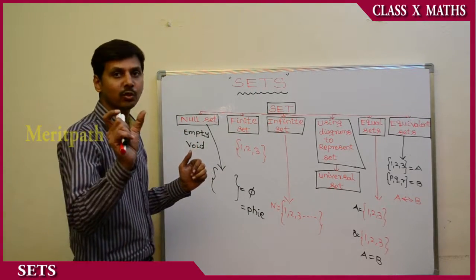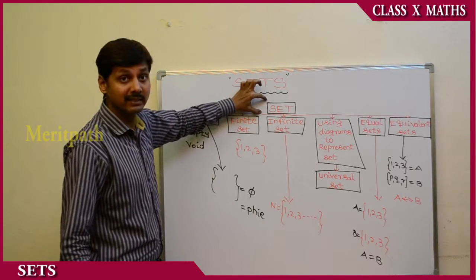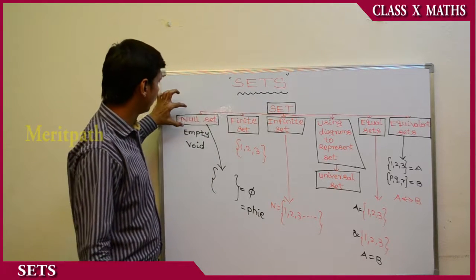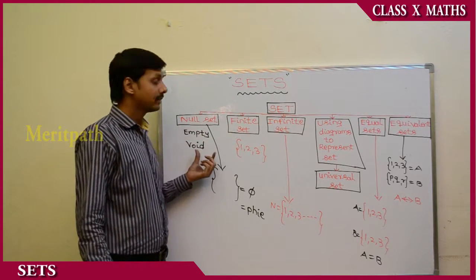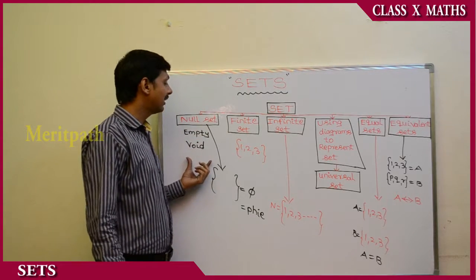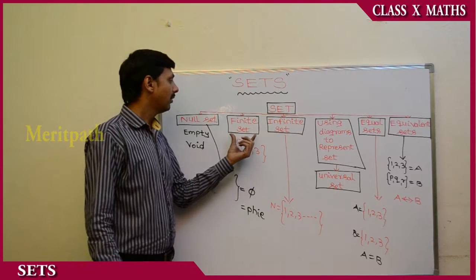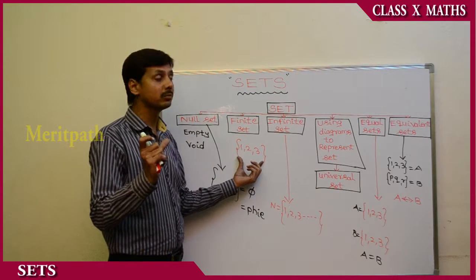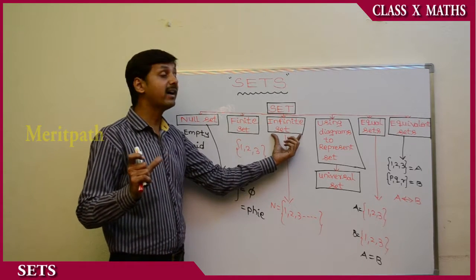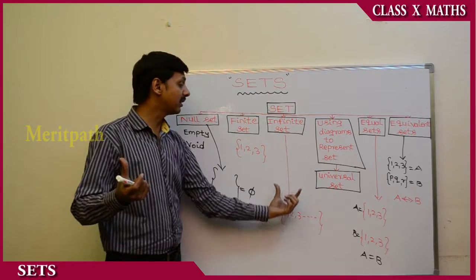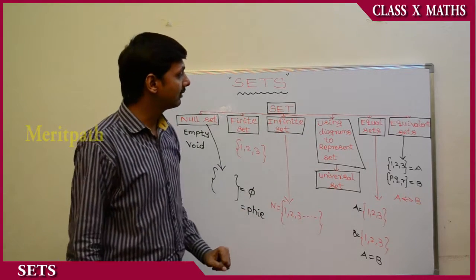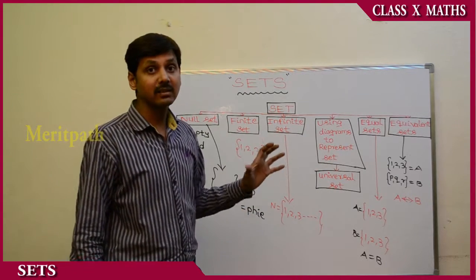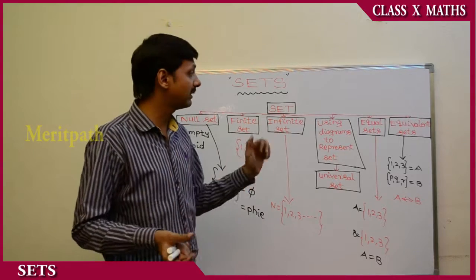To recap: a well-defined collection of objects is called a set. A set with no elements is a null or void set. A finite set has countable elements; an infinite set has uncountable elements. In equal sets, the number of elements and the same elements are present; in equivalent sets, only the number of elements is equal.